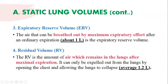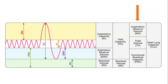The third static lung volume is expiratory reserve volume — the air that can be breathed out by maximum expiratory effort after an ordinary expiration. So after normal inspiration, if you exhale maximally with maximum capacity, that is called the expiratory reserve volume, and it comes to approximately 1 liter.